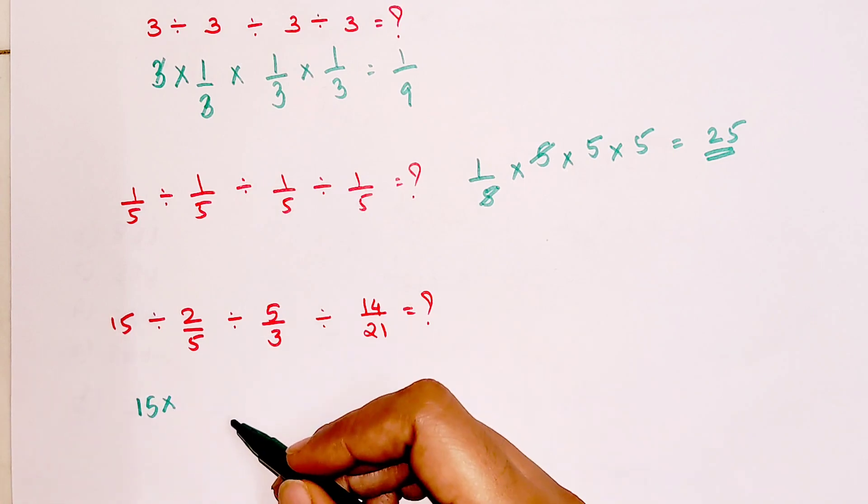Now, what about something like this? What we should do in that case? We will simply change the signs first. Also students, before beginning with this, I would like to remind you that at the end of this question, I will put up a DIY whose answers you all can mention in the comment section. So here, this will be 5 upon 2, this will be 3 upon 5, this will be 21 upon 14. So this 5 and this 5 is cancelling.